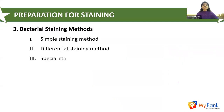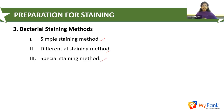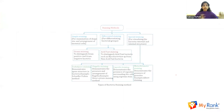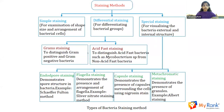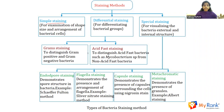Now let's talk about the bacterial staining methods. There are three important categories: simple staining methods, differential staining methods, and special staining methods. Staining methods are categorized in three ways, and I'll be discussing each in further detail. The simple staining methods are used for examination of shape, size, and arrangement of bacterial cells.